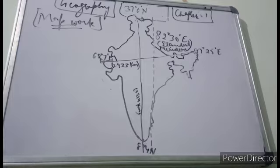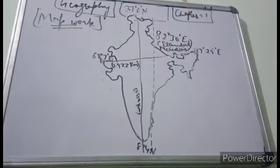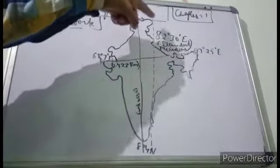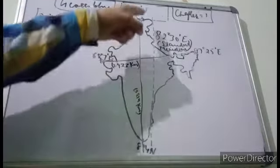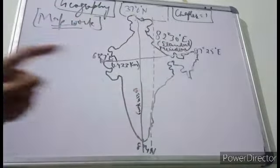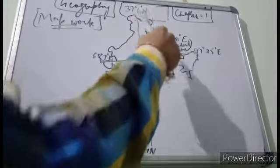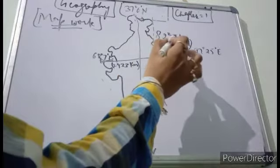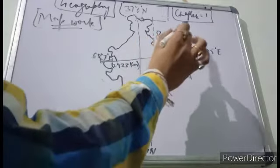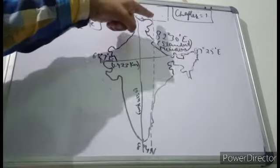First we shall discuss the location of the Standard Meridian. The Standard Meridian is that imaginary line that divides India from the center — it is a longitude that passes through the complete center of India. It passes through Mirzapur in Uttar Pradesh, and its location is 82 degrees 30 minutes East. You can see it here as a dotted line.